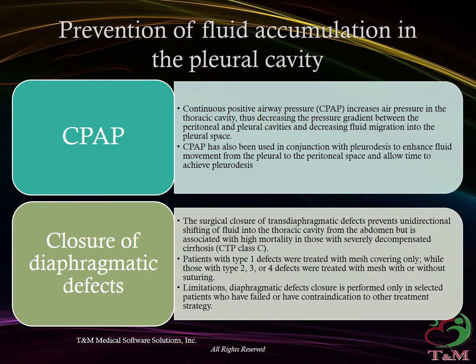Prevention of fluid accumulation in the pleural cavity: Continuous positive airway pressure (CPAP) increases air pressure in the thoracic cavity, decreasing the pressure gradient between the peritoneal and pleural cavities and decreasing fluid migration into the pleural space. CPAP has also been used in conjunction with pleurodesis to enhance fluid movement from the pleural to the peritoneal space. Surgical closure of transdiaphragmatic defects prevents unidirectional shifting of fluid into the thoracic cavity from the abdomen, but is associated with high mortality in those with severely decompensated cirrhosis, CTP class C.